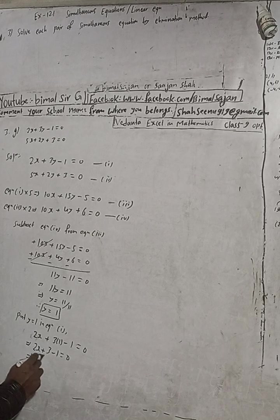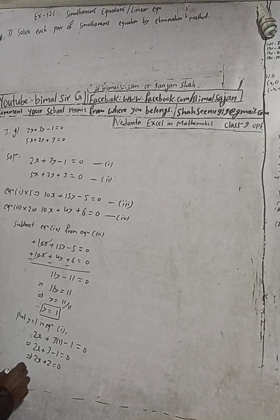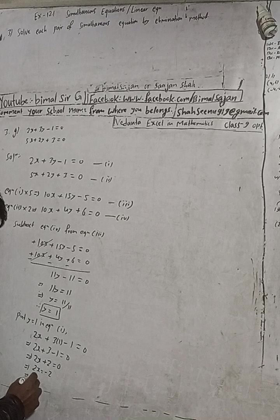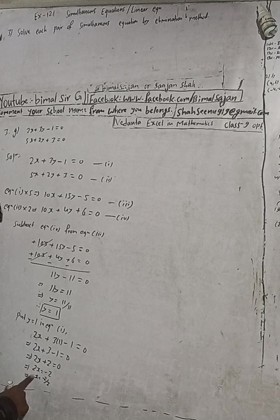This implies 2x plus 3 minus 1 is plus 2, is equal to 0. This implies 2x is equal to plus 2, minus 2. And this implies 2x is equal to minus 2, divided by this 2. x is equal to minus 2 divided by 2.